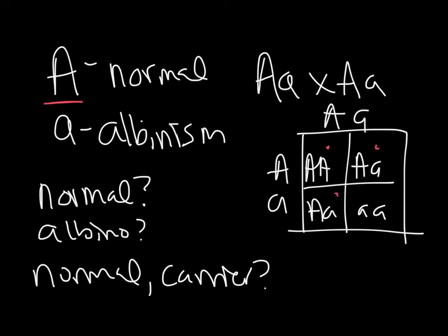So the chance — and they ask us what's the chance, which is a fraction — the chance of having a normal child is 3 out of 4. The chance of having an albino child is just this one box here, so that's a 1 out of 4 chance. Then this is the only part that's kind of tricky: they ask what's the probability, if you have a normal child, that child's a carrier.